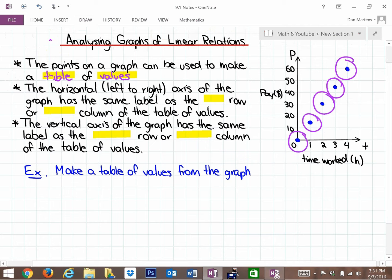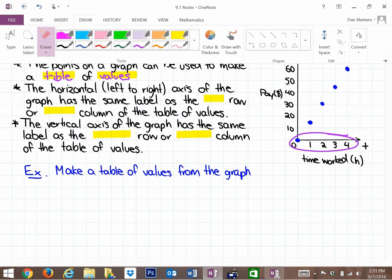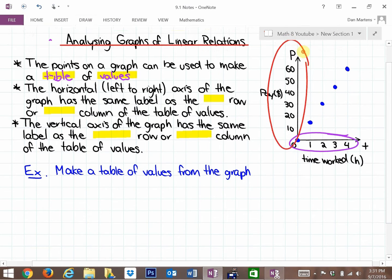Next, the horizontal or left to right axis. To create a table of values, there are two axes. This is called the horizontal axis because it goes from left to right, and this is called the vertical axis. The purple is the horizontal axis, and the red is what we call the vertical axis.